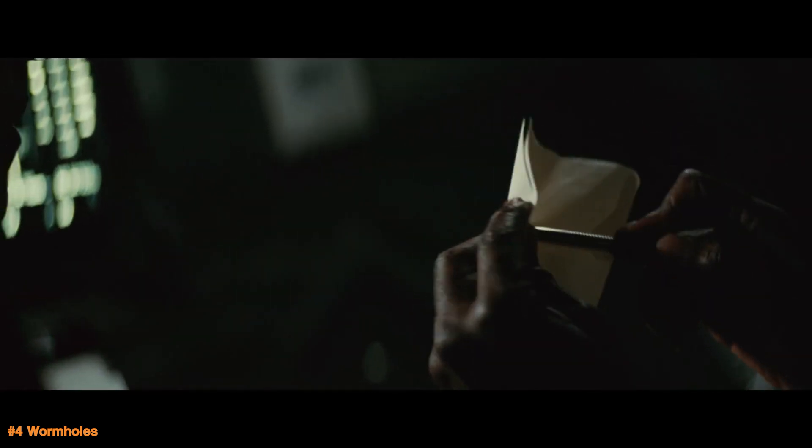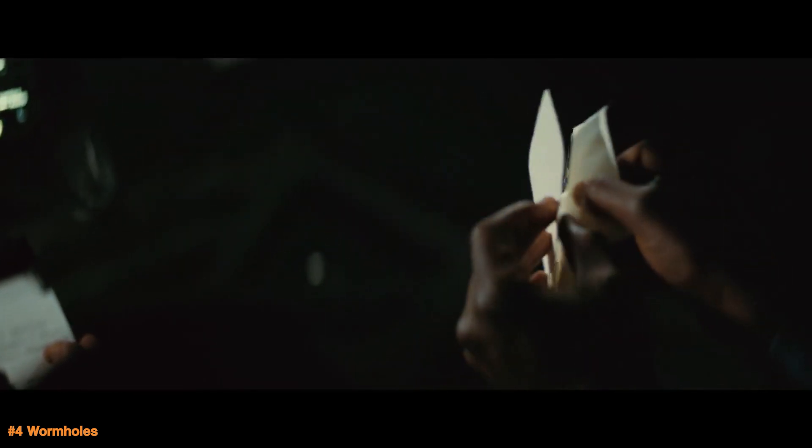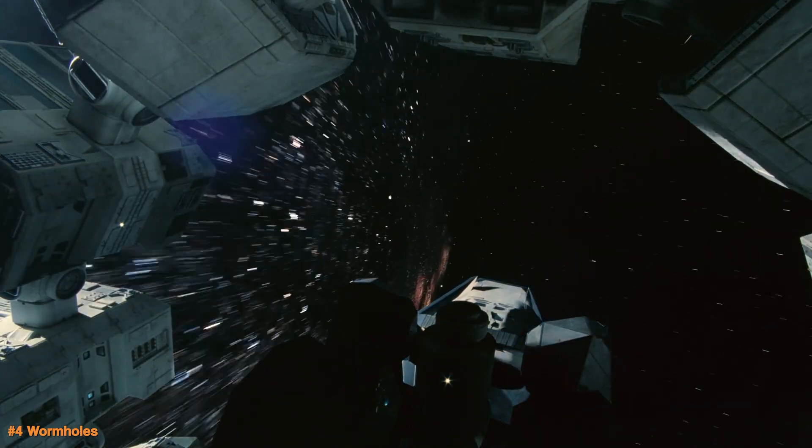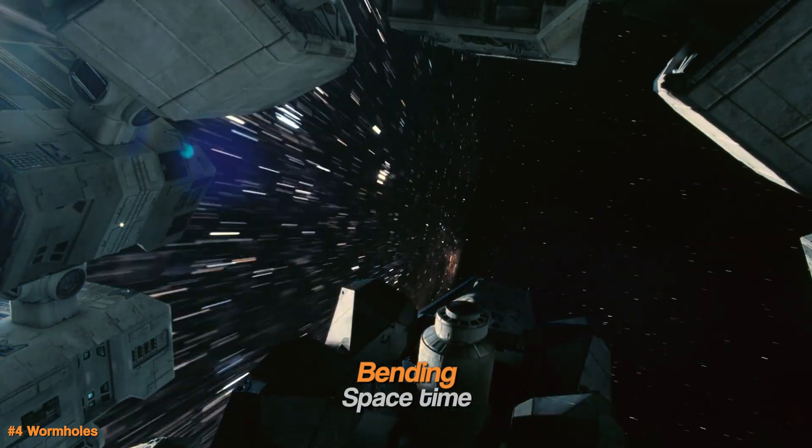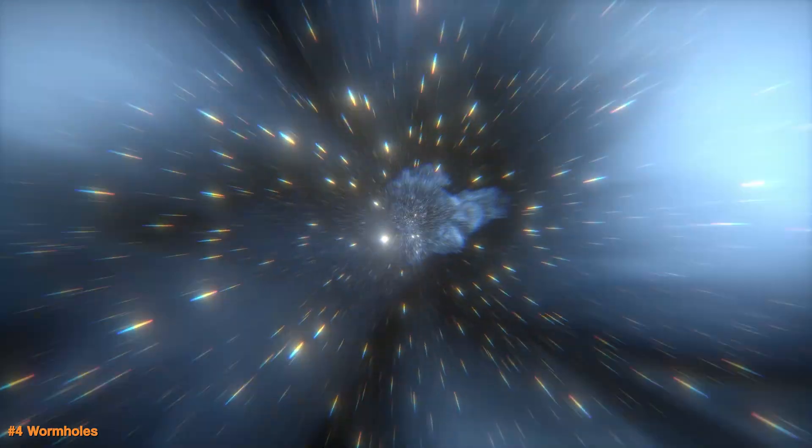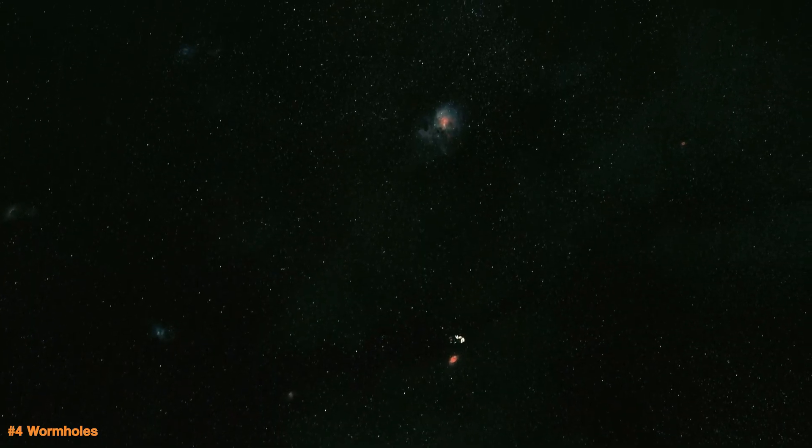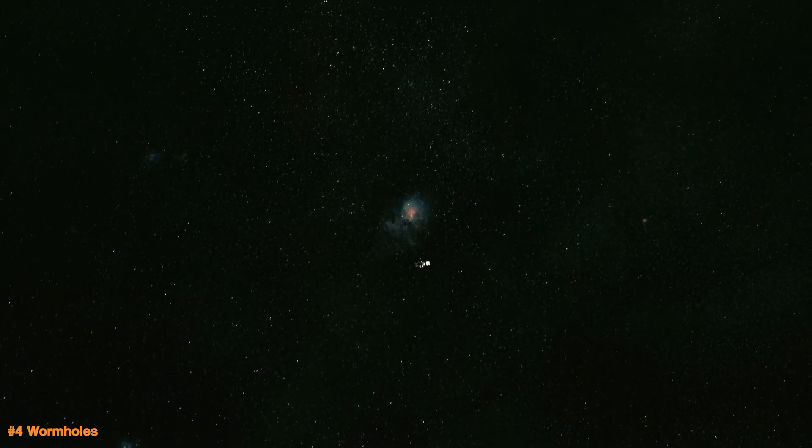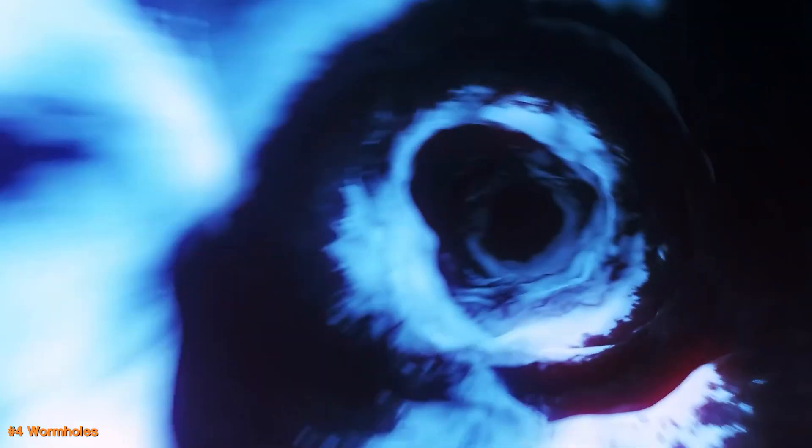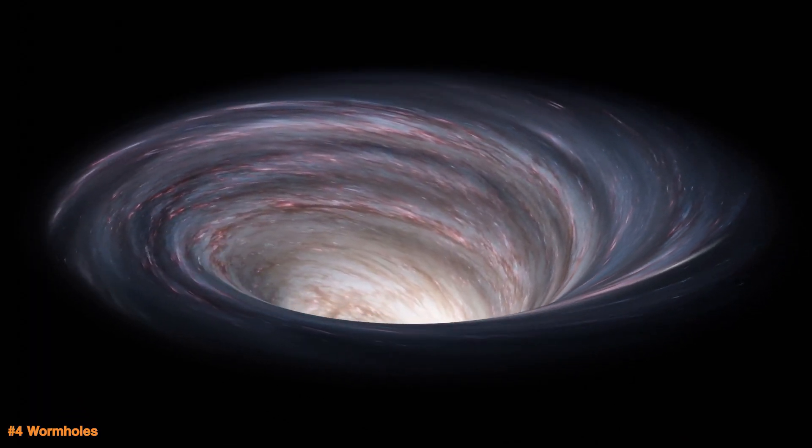Now, fold the paper so that point A and point B overlap. This folding represents the creation of a wormhole, a tunnel that connects two distant points in space by bending space-time. Instead of traveling across the paper's surface, you can now simply step through the tunnel and emerge at the other point, bypassing the longer journey across the paper. However, this would shave years and possibly decades in travel time, which is why they might become very commonplace in the future.